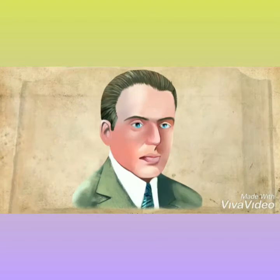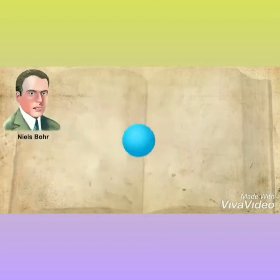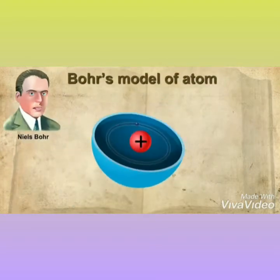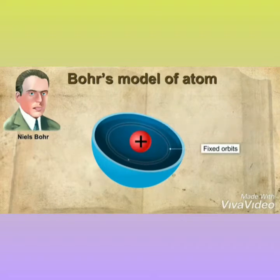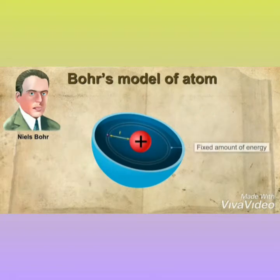Bohr said that electrons do revolve around the nucleus but the energy remains fixed. He explained that the energy of the electron remains fixed because they are restricted to some fixed orbits. Each of these orbits is at a fixed distance from the nucleus and is associated with a fixed amount of energy.